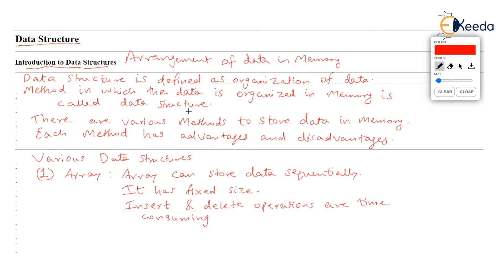There are various methods to store data in memory, and each method has advantages and disadvantages. Let's see what the various methods — that is, the various data structures — are. Array is a data structure, because array is an arrangement of data. Array stores data sequentially: zeroth location, first location, second location. Array always has a fixed size. Whenever you write a program using arrays, you declare an array with some size — let's say 100 or 200 — and that array will continue to have that size throughout the program.